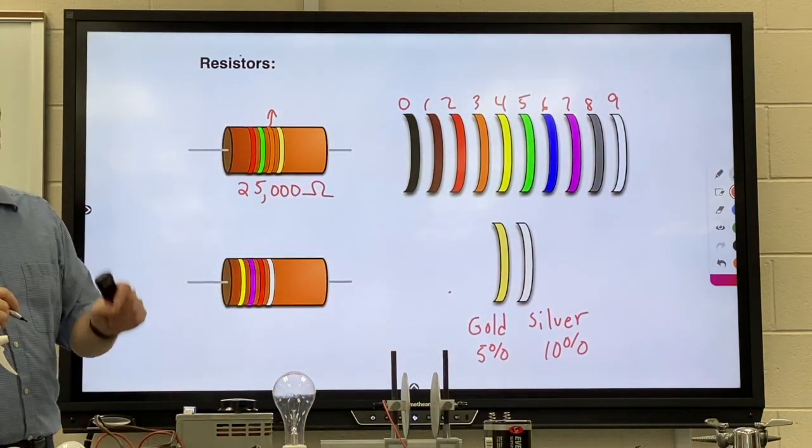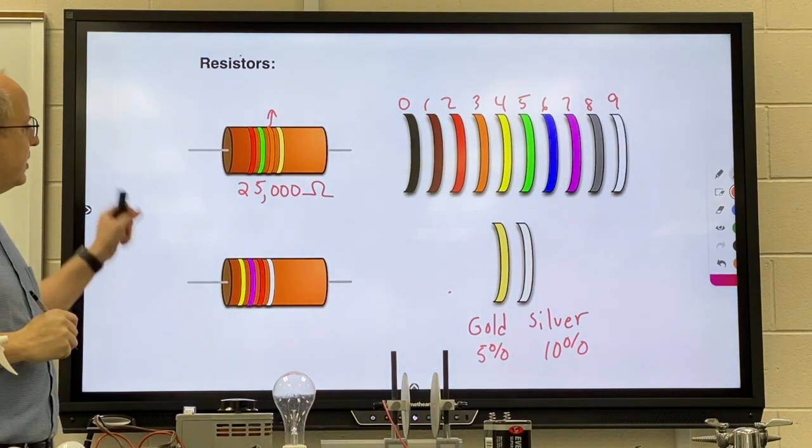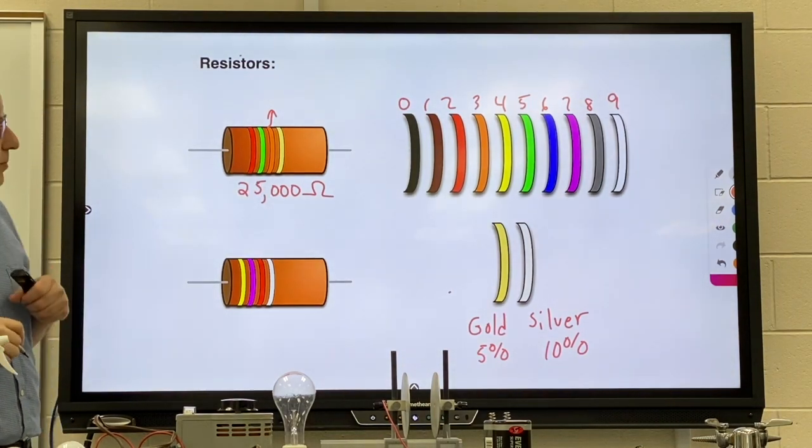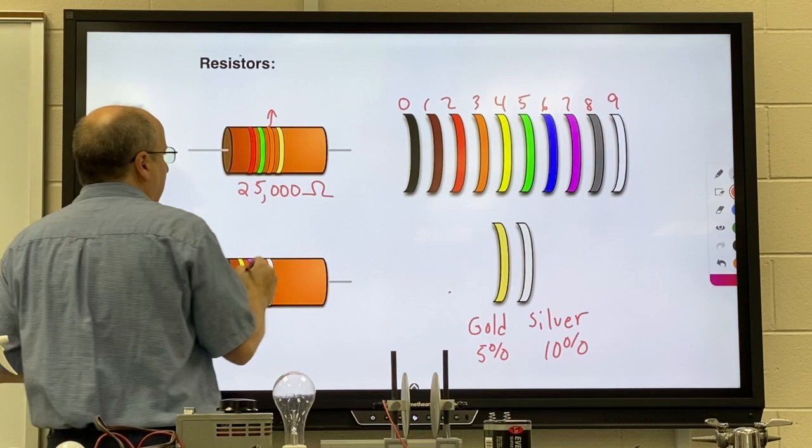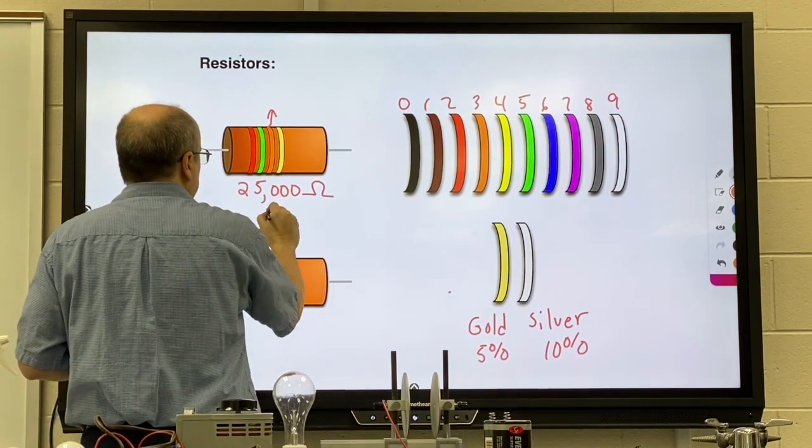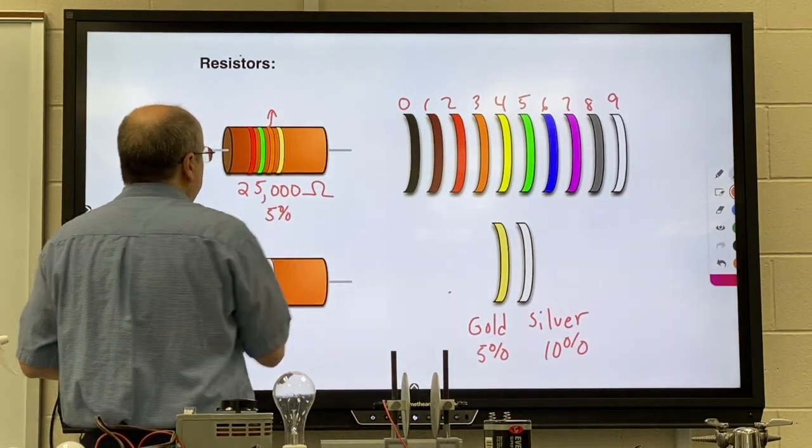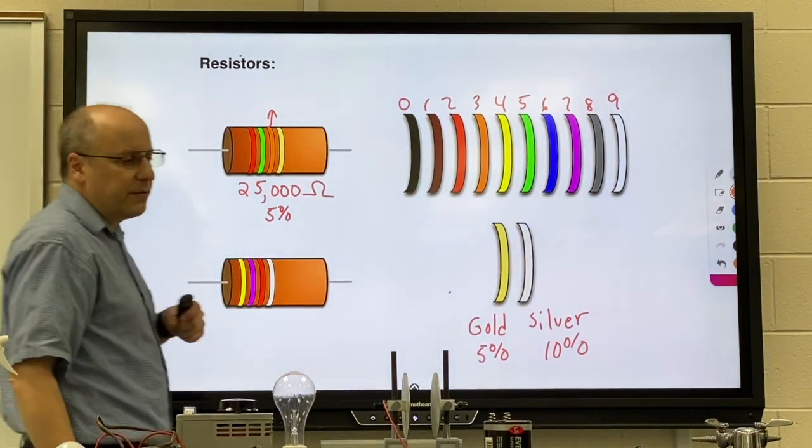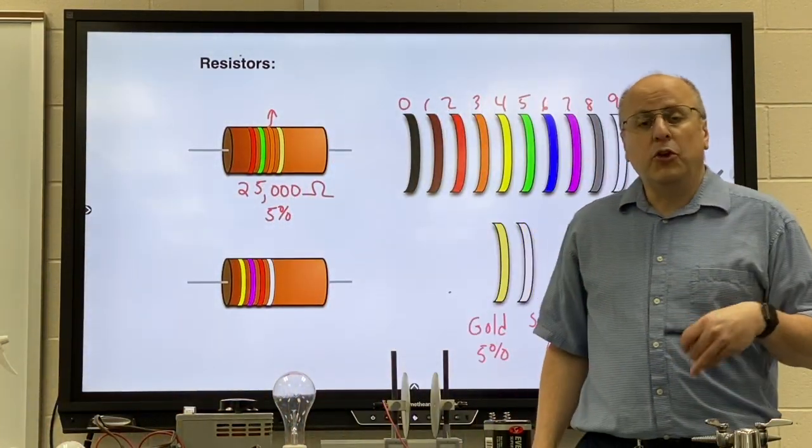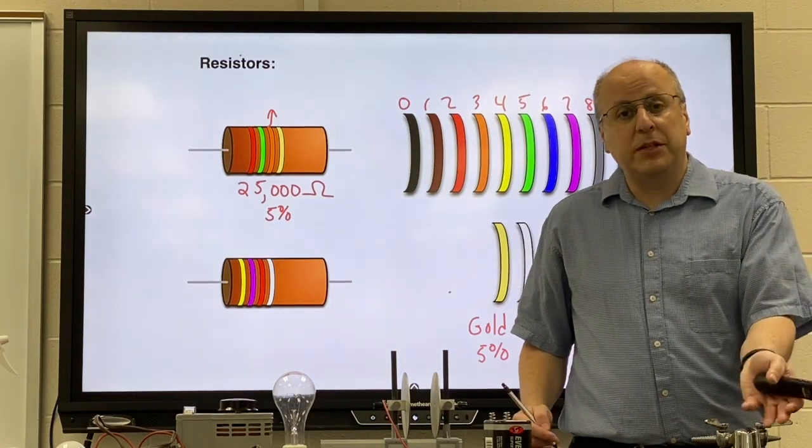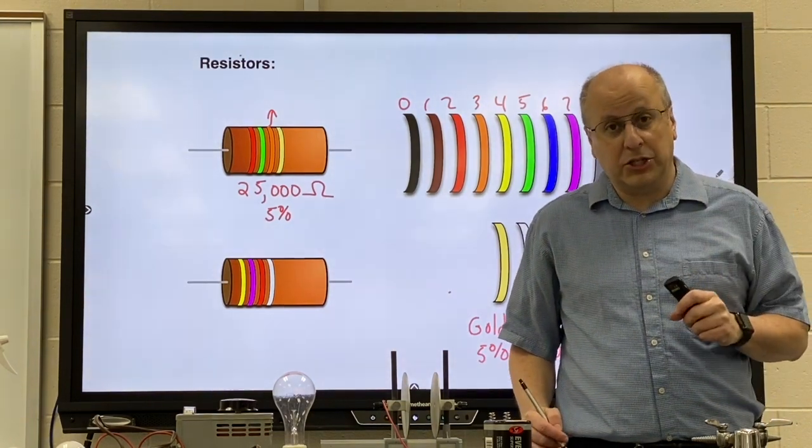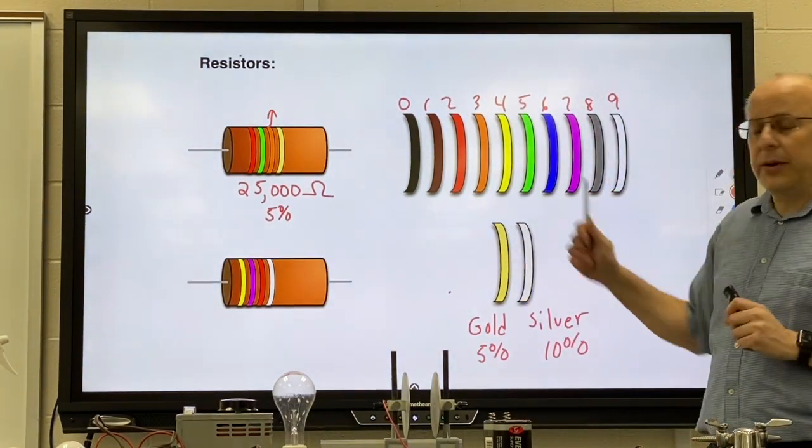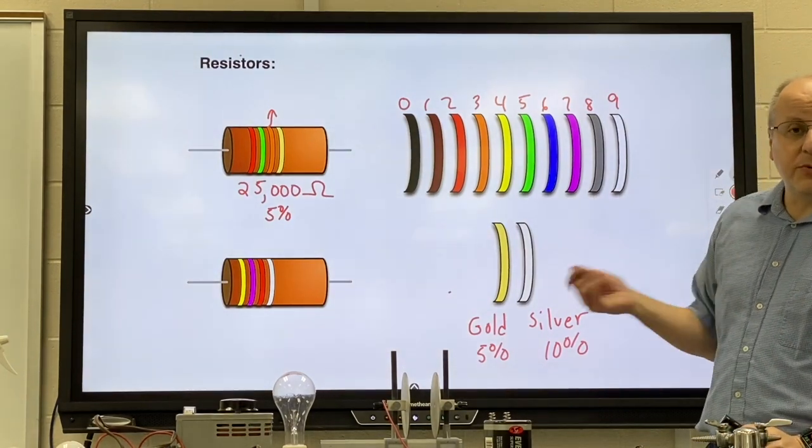So that resistor red, green, orange is 25,000 ohms. Since gold is the third stripe it could be off by up to 5%. So if you take five percent of 25,000 you might be lower by that much or higher by that much. I'll show you exactly what I mean with the next one because it will be easier with ten percent.